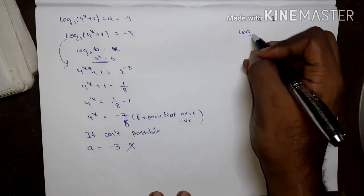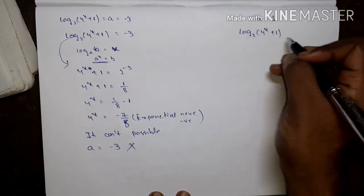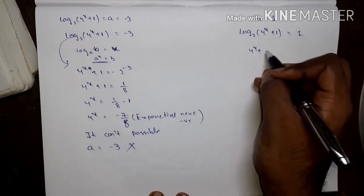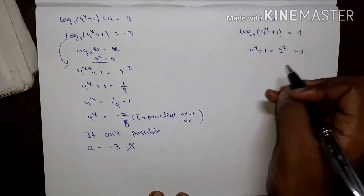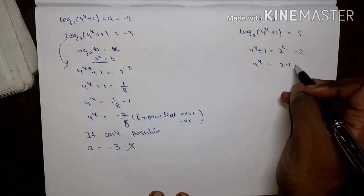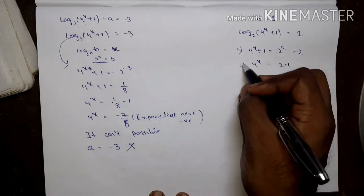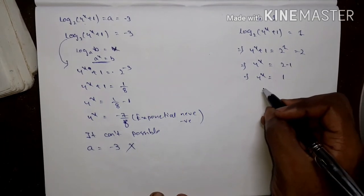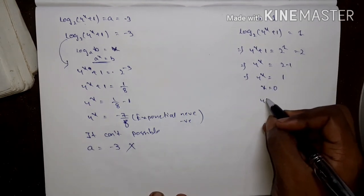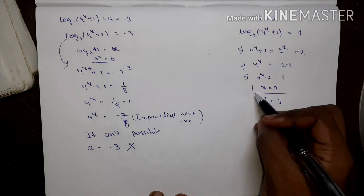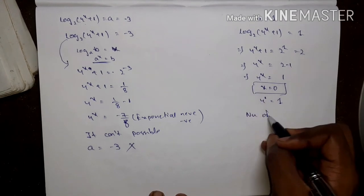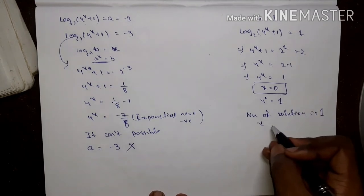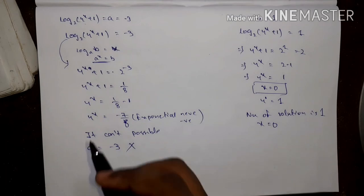So take y equals 1: log_2(4^(x+1)) equals 1, so 4^(x+1) equals 2^1 equals 2. Then 4^x equals 2/4 equals 1/2... Actually 4^x equals 1, so x equals 0, since 4^0 equals 1. The number of solutions is 1, and x equals 0.